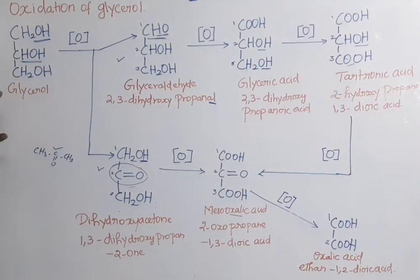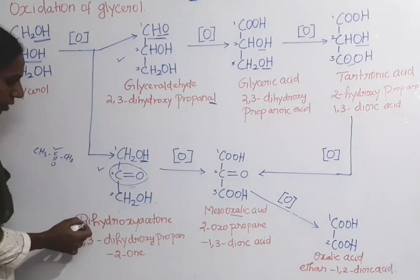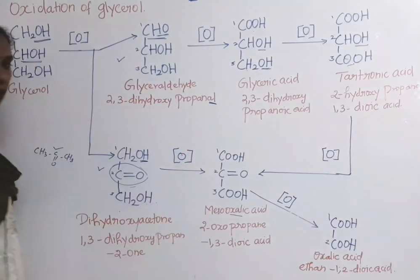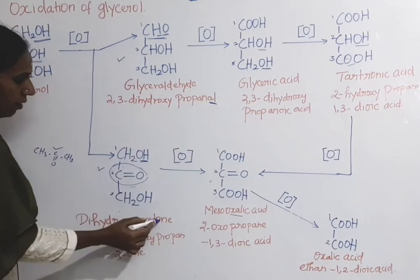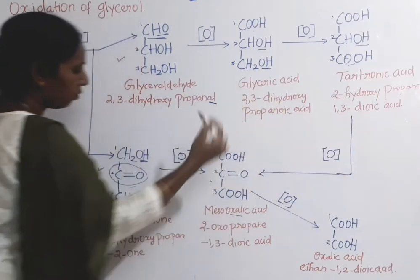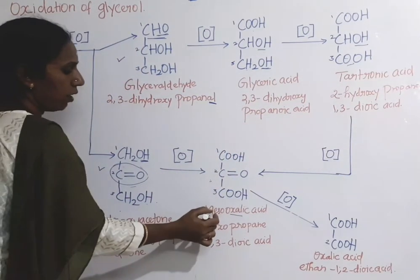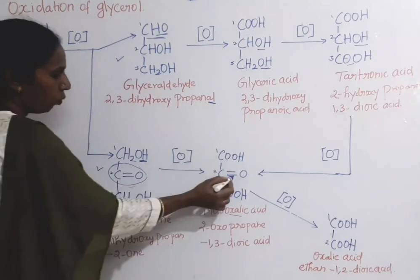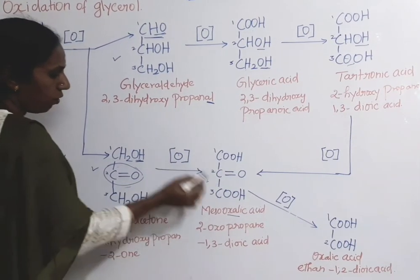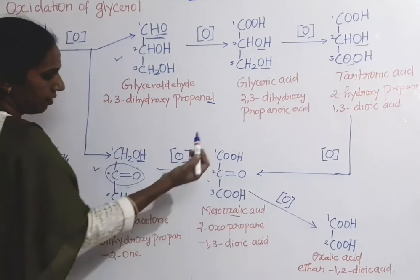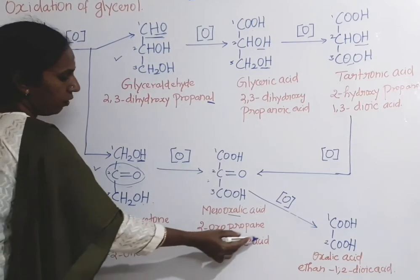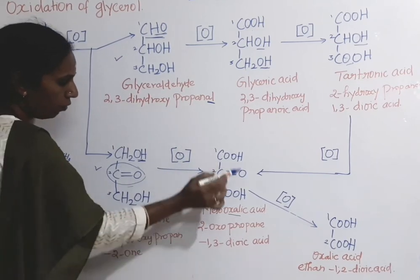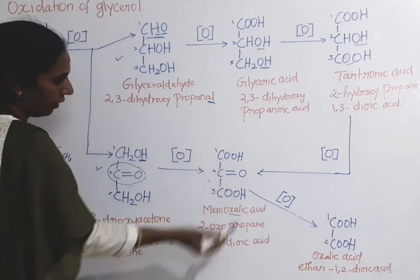In the next step, both dihydroxyacetone and tartronic acid undergo oxidation to give the same product: mesoxalic acid. In dihydroxyacetone, the alcohol group is oxidized to an acid, and the keto group remains, while the other alcoholic group is also oxidized to an acid. Mesoxalic acid is also named 2-oxopropane-1,3-dioic acid — first, second, and third carbons — with one acid group at C1, one acid group at C3 (1,3-dioic acid), and a keto group at C2.